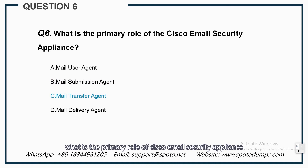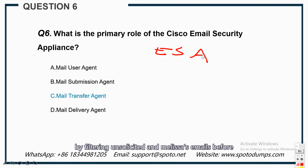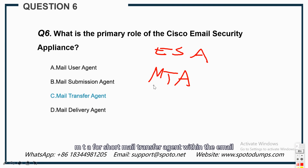Question six: What is the primary role of Cisco Email Security Appliance? The ESA can protect the email infrastructure and employees who use email at work by filtering unsolicited and malicious emails before they reach the user. Cisco's ESA can easily integrate into existing email infrastructure with a high degree of flexibility. It does this by acting as a Mail Transfer Agent, or MTA, within the email delivery chain. So C, Mail Transfer Agent, is the correct answer for question six.